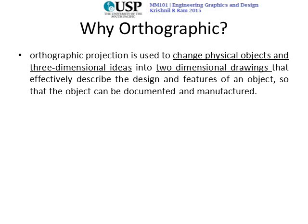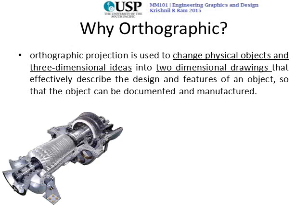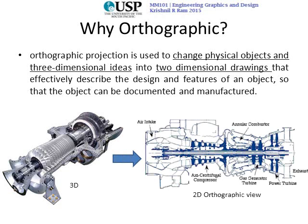Orthographic projection is used to change physical objects and three-dimensional ideas into two-dimensional drawings that effectively describe the design and features of an object, so that it can be documented and later manufactured. For example, if you were to see a three-dimensional view of the gas turbine, it would be very difficult to understand what's going on and very difficult to manufacture. Whereas if someone converted the drawing into a two-dimensional orthographic view and clearly labeled the details, it makes the work very easy.